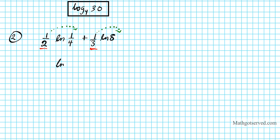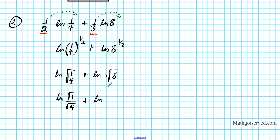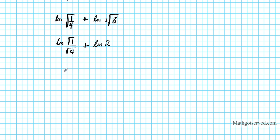So we have the natural logarithm of one-fourth raised to the one-half, plus the natural logarithm of 8 raised to the one-third. Using the radical approach, this becomes the natural logarithm of the square root of one-fourth, plus the natural logarithm of the cube root of 8. Simplifying further, the square root of one-fourth is one-half — using properties of radicals — and the cube root of 8 is 2. So we have the natural logarithm of one-half, plus the natural logarithm of 2.